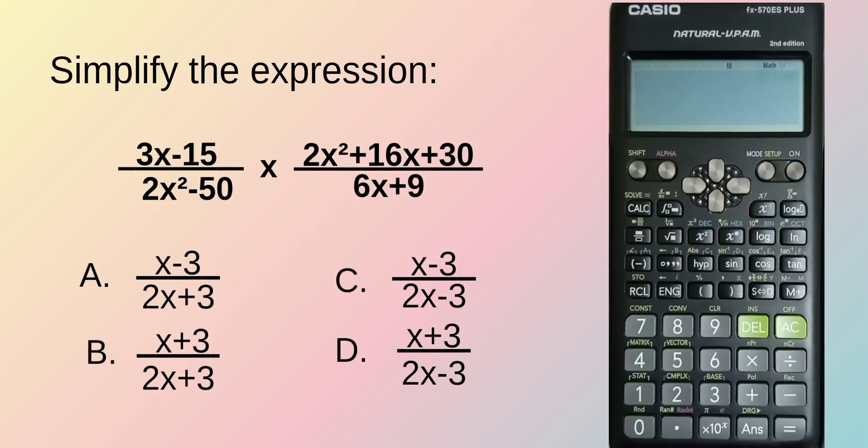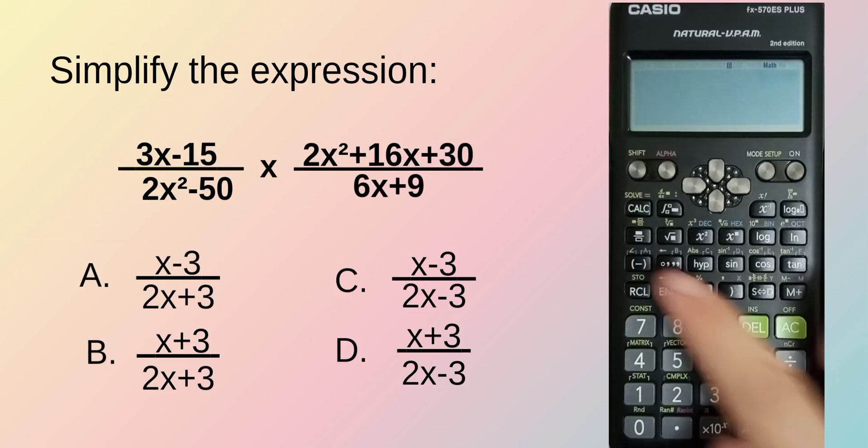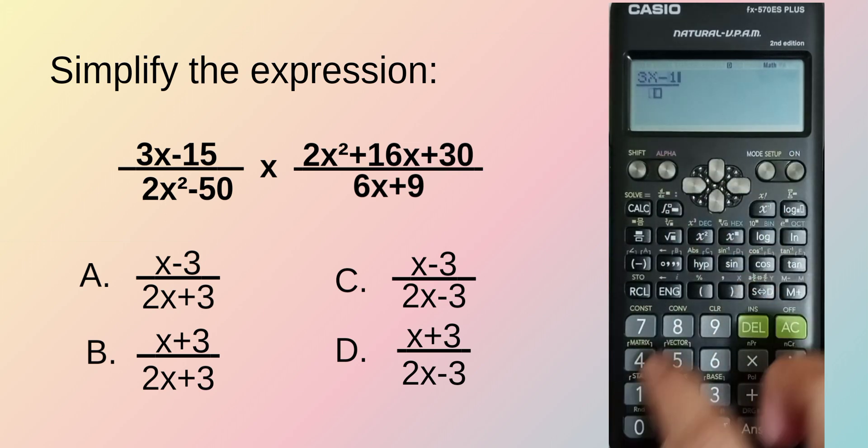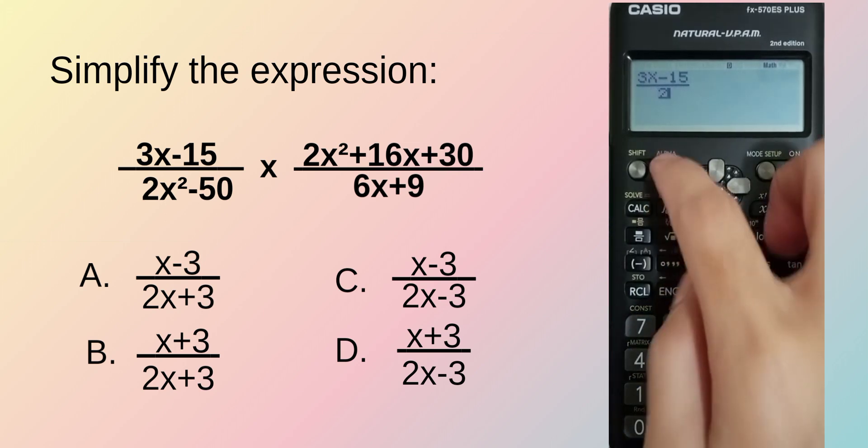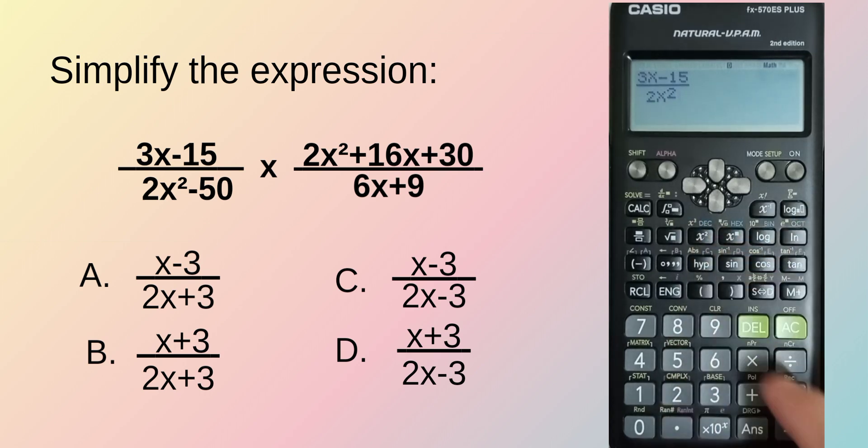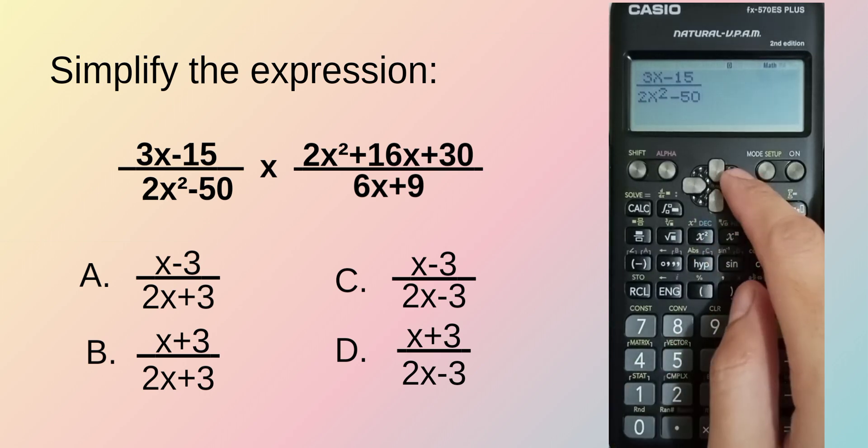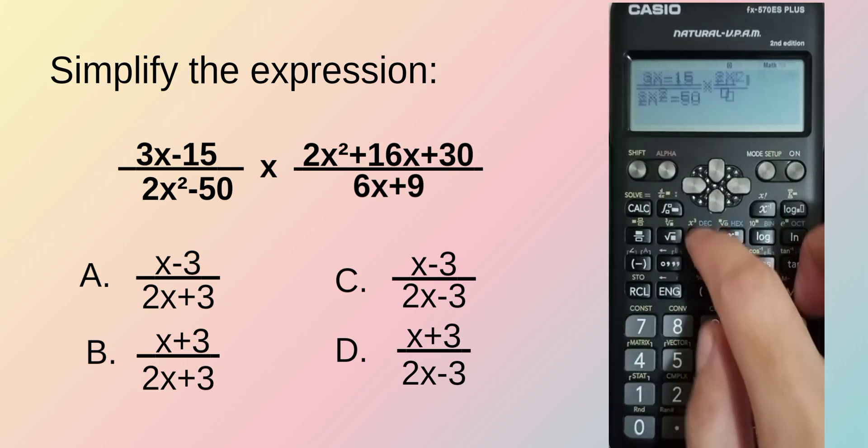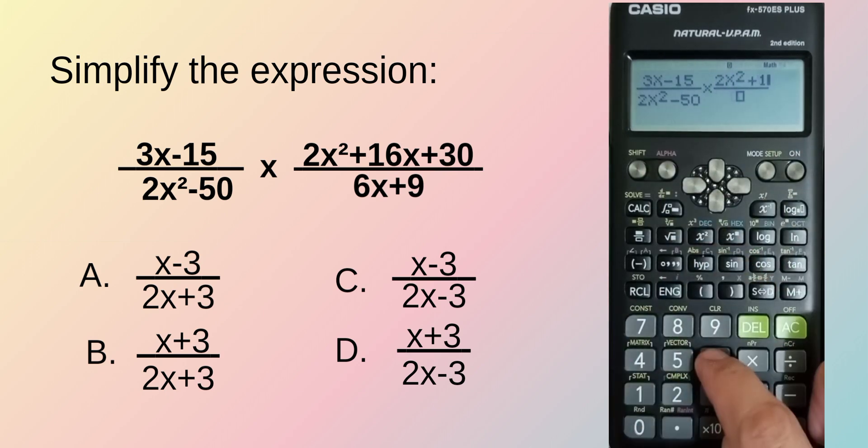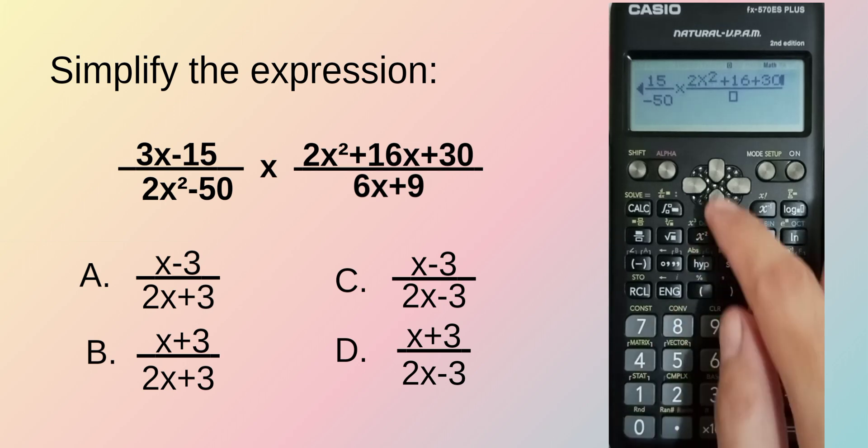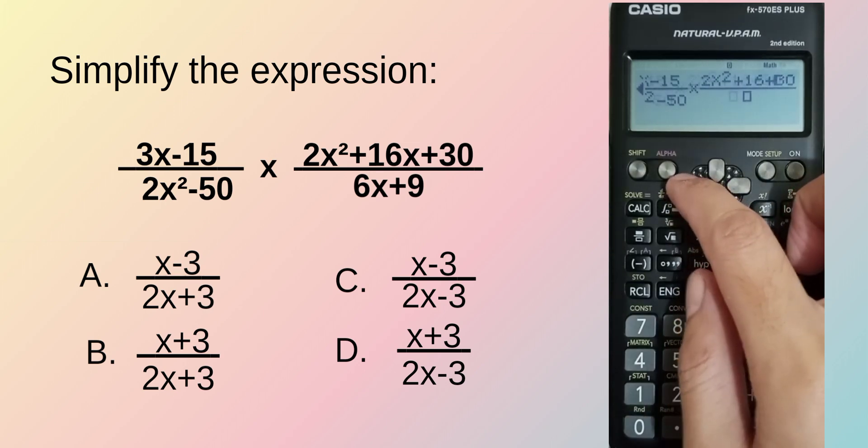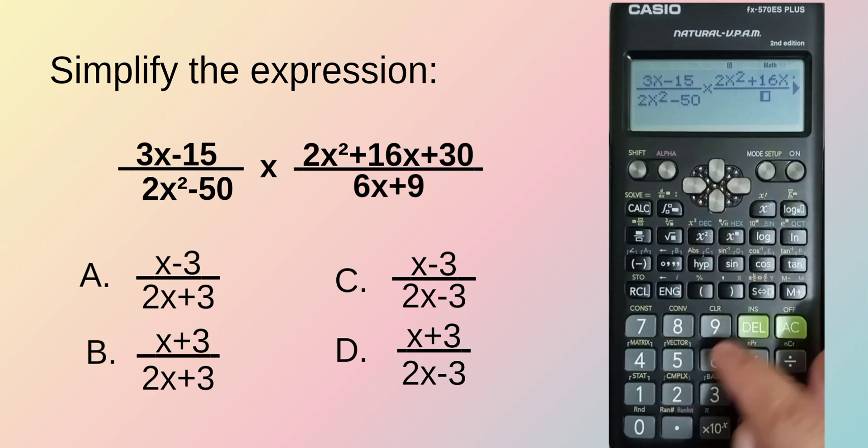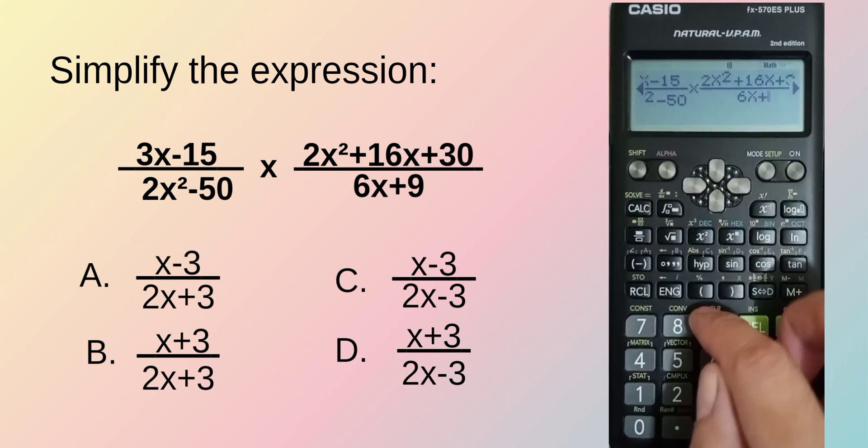Simplify the expression: 3x minus 15 over 2x squared minus 50 times 2x squared plus 16x plus 30 over 6x plus 9.